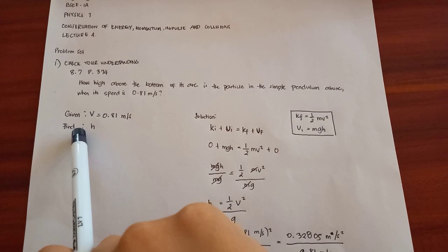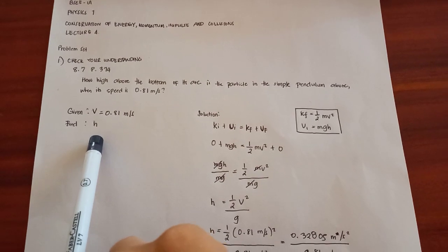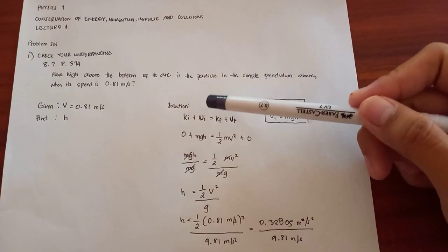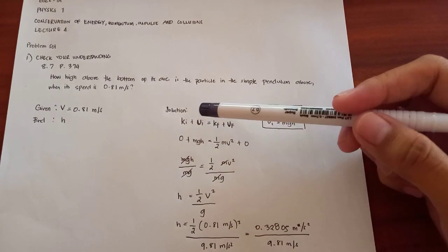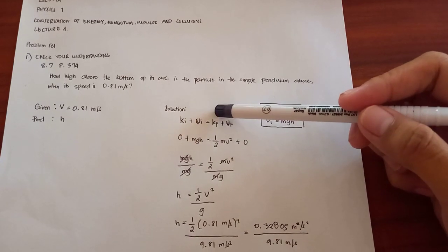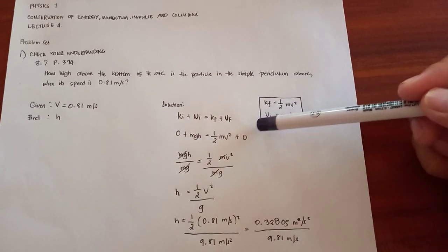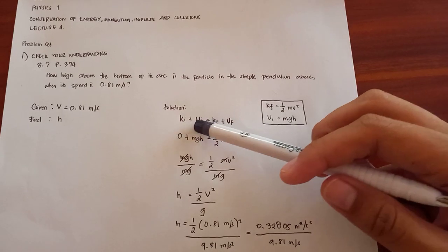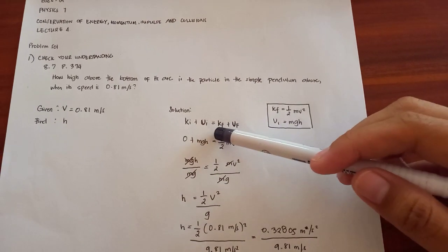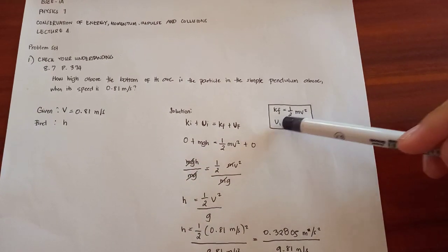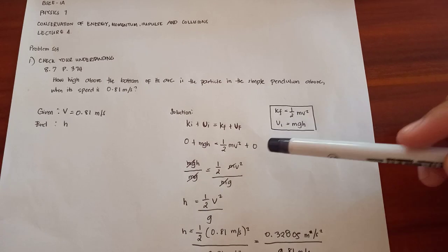So the given is speed equals 0.81 meters per second. Find the height h. So the solution here is Ki or the initial kinetic energy plus Ui is equal to final kinetic energy Kf plus Uf. The Ki is 0, then plus Mgh which is the Ui is equal to Kf which is one-half mv squared plus